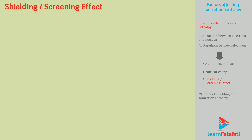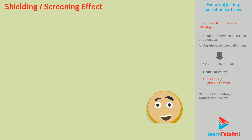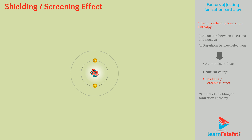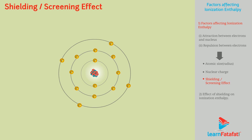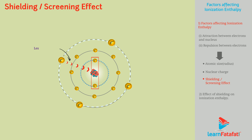Shielding or screening effect. The concept is actually very easy. Electrons are present in the shells around the nucleus. Due to the presence of electrons in inner shells, the electrons in outer shells experience less positive charge. This is called the shielding effect.